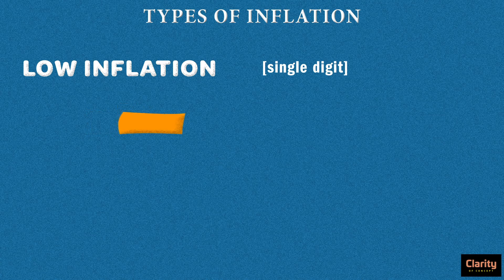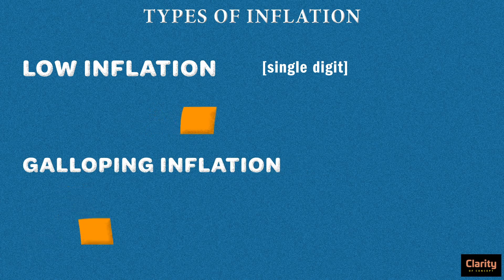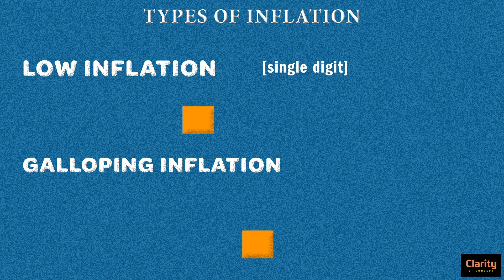The second type is galloping inflation, or runaway inflation. If low inflation creeps on the ground, galloping inflation jumps dramatically. The inflation rate is anywhere between 50 to 700% in one year.